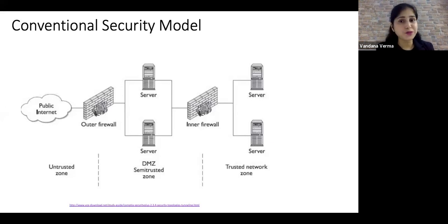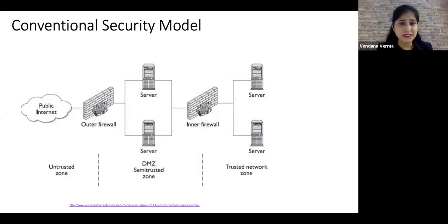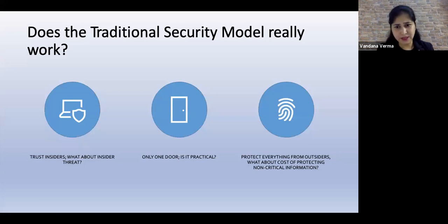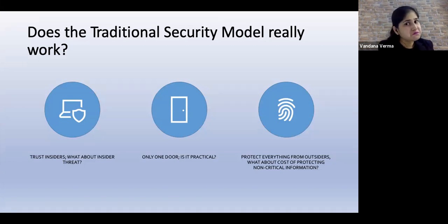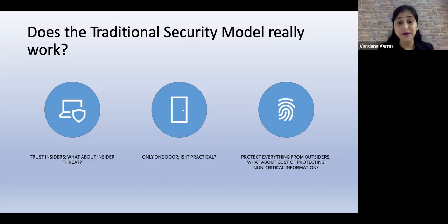This trust model continued to be abused. The traditional castle-and-moat model of cybersecurity is no longer adequate to combat modern cyber threats — all the APTs and whatnot we are dealing with nowadays. The question arises: what about threats caused by insiders? If someone loses credentials, anyone can come and access the network. Is it practical to protect everything from outsiders? And how about the cost of protecting non-critical information? It's a huge amount of money.